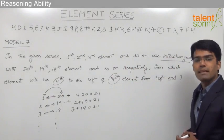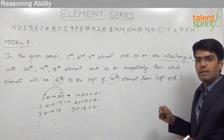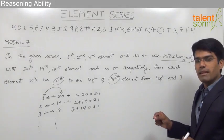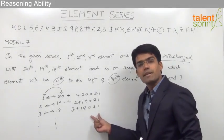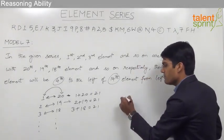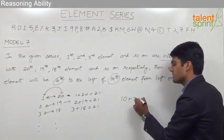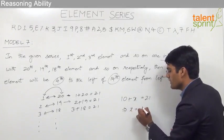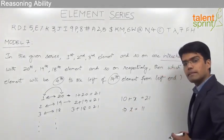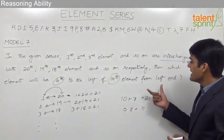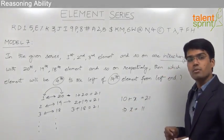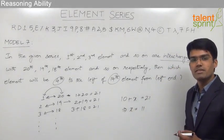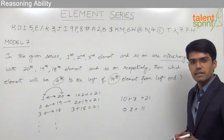But since the elements are being interchanged, the 10th element should be interchanged with one particular element such that their positions sum to 21. So 10 plus the other element's position equals 21, which means the other position is 11. Therefore, instead of taking the 10th element from the left end, we take the 11th element, as these two elements are interchanged to give a sum of 21.